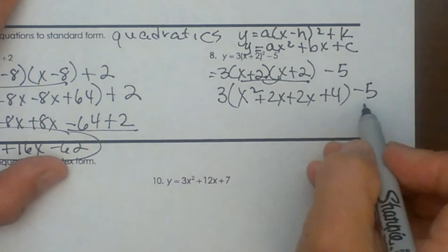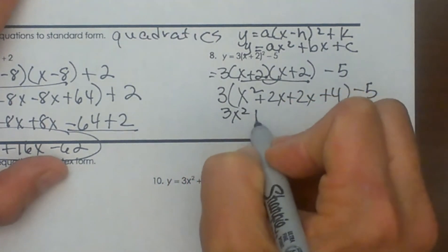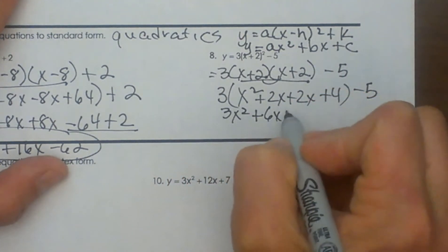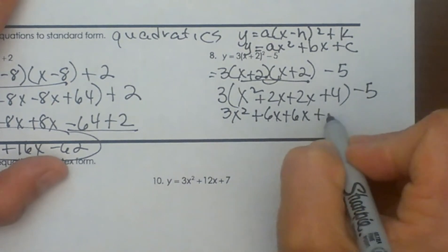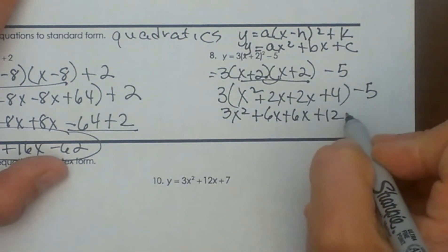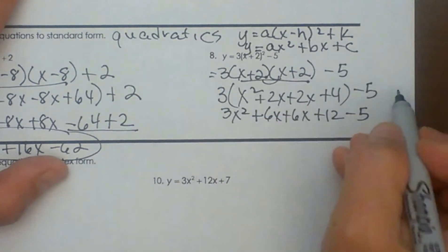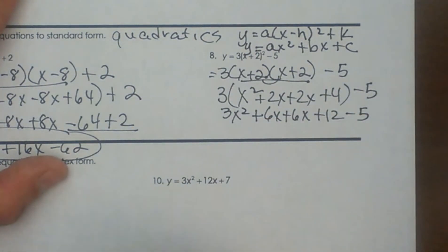Now I'm going to distribute in the 3. So I have 3x² + 6x + 6x + 12, and then bring down the -5. The 3 does not get distributed to the 5 because it's not in parentheses.